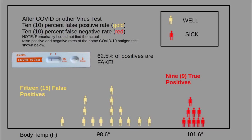The iHealth COVID-19 home antigen test is shown with a negative test result as a concrete example. However, I could not find the false positive or false negative rates of the test on the container or in the detailed printed instructions provided with the test. The 10% false positive and negative rates are for a purely hypothetical example. In the hypothetical example, our test gives us about 15 false positives — healthy people who are reported sick by the test.